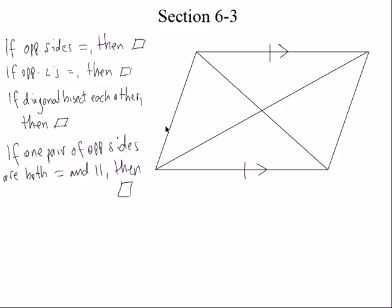These are all theorems, and they're all basically converses of what we talked about before. Because what did we talk about before? We said if it's a parallelogram, then the opposite sides are equal, the opposite angles are equal, the diagonals bisect each other. So we said if it was a parallelogram, then all that stuff was true. What are we saying today, though? If it's a quadrilateral and the opposite sides are equal, and the opposite angles are equal, or the diagonals bisect each other, then guess what the thing is? It's a parallelogram. Do you see the converse?